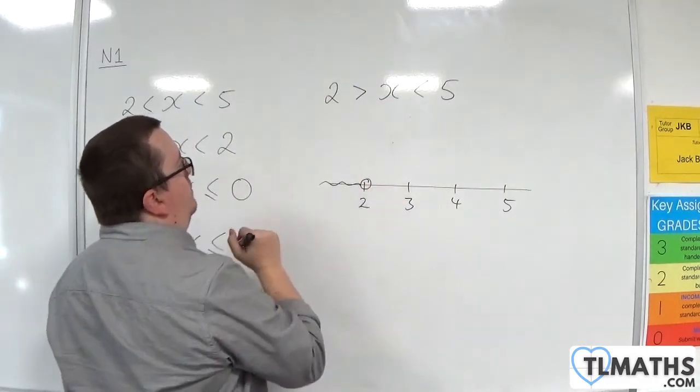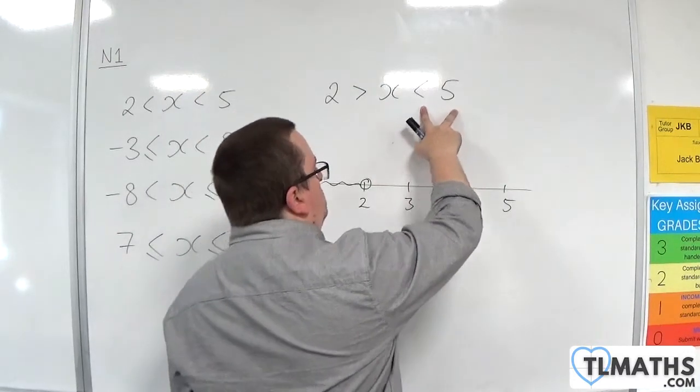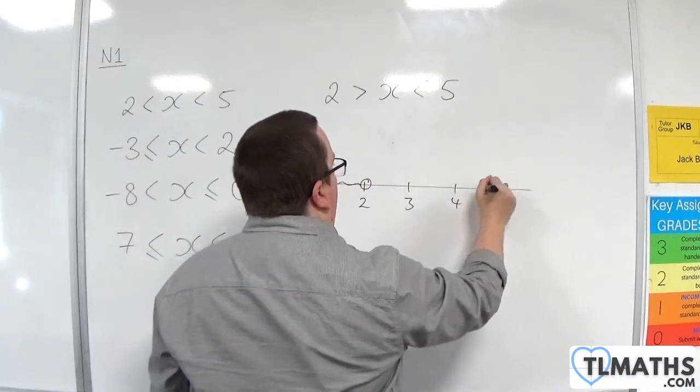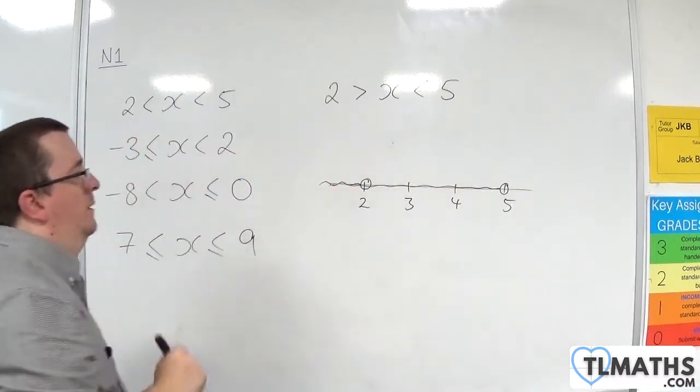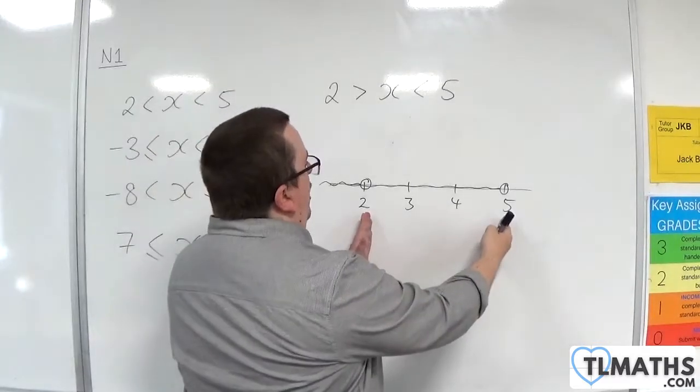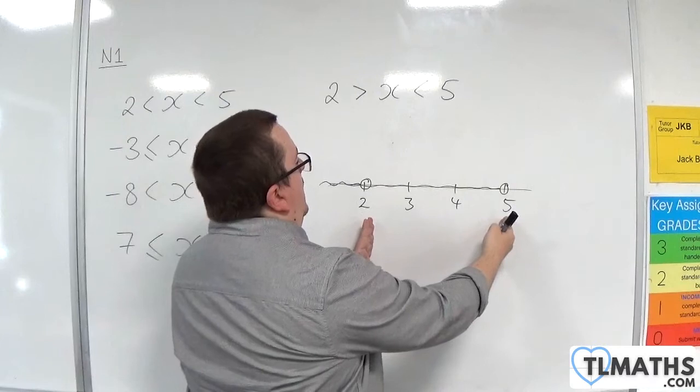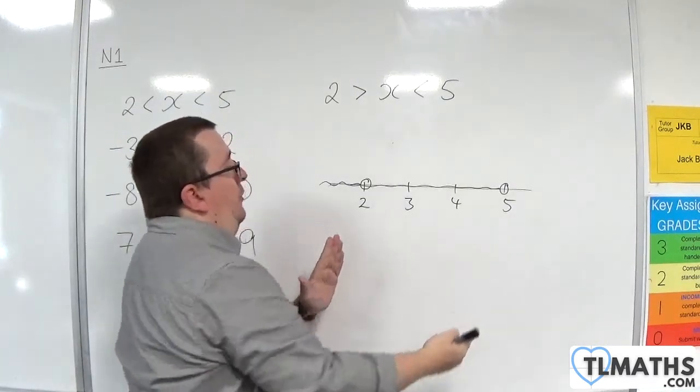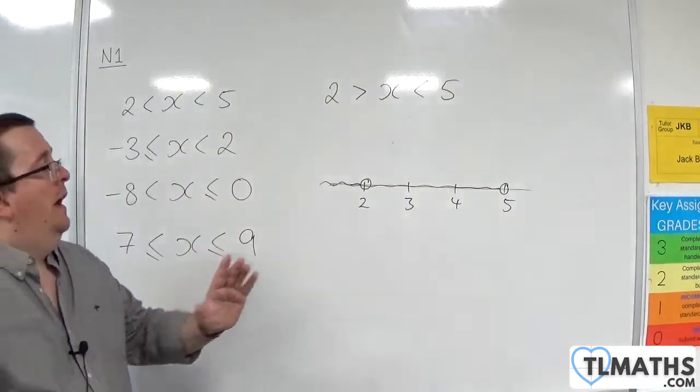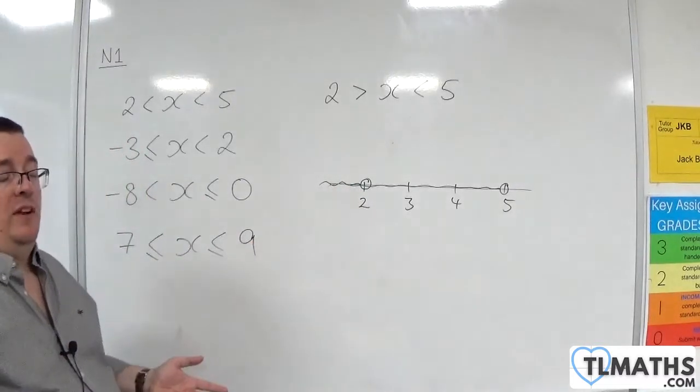x is less than 2, so that would be that region. And x is less than 5, so that would be that region. Essentially it's describing a portion of the graph that is unneeded, this 2 to 5, because that's the only region that is satisfied by both, and it's got to be satisfied by both.